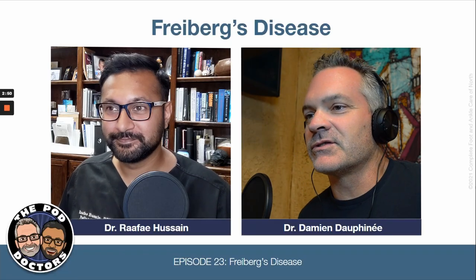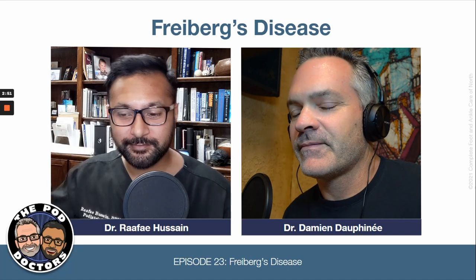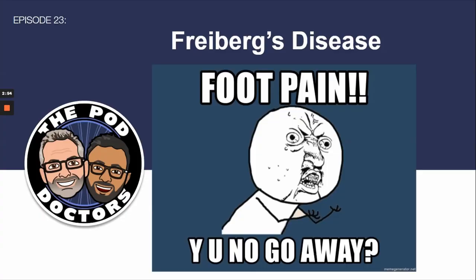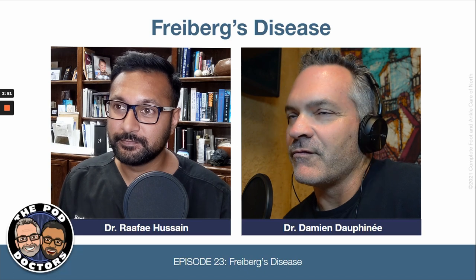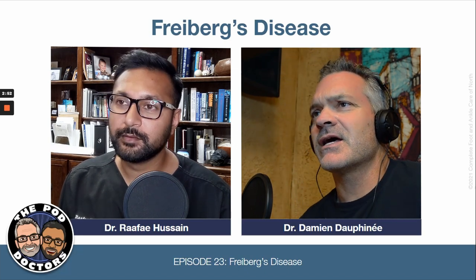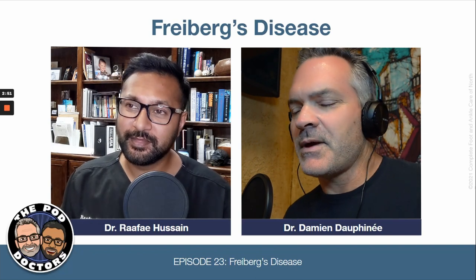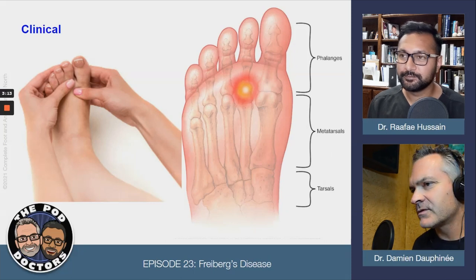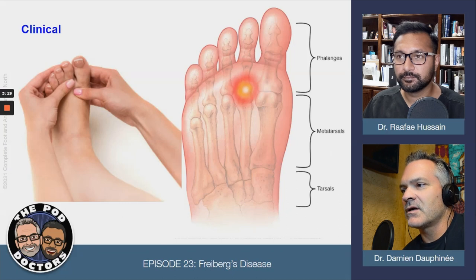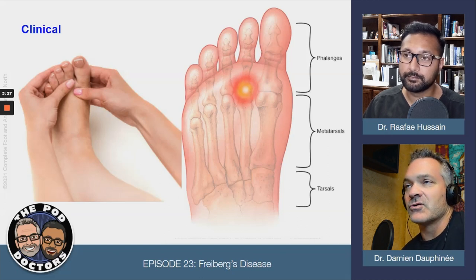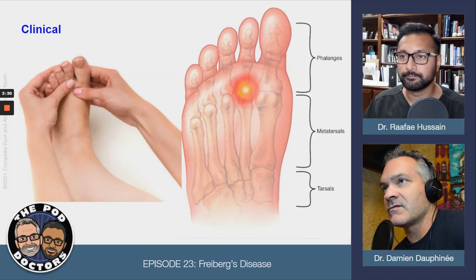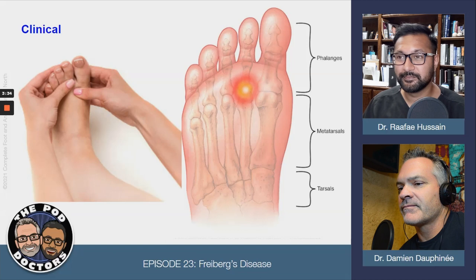Welcome to the Pod Doctors. I'm Dr. Damian Dauphine, here with my partner Dr. Rafi Hussein. We're going to talk today about Freiberg's disease, also known as Freiberg's infraction — not infarction, yeah, that's commonly missed — and it's a fairly common source of forefoot pain. Bo Jackson had avascular necrosis happen to his femoral head and that destroyed his joint.